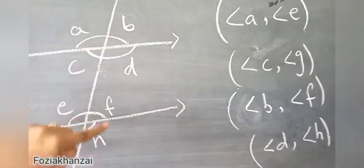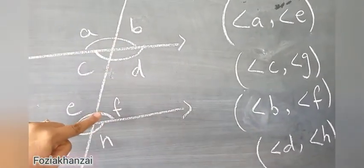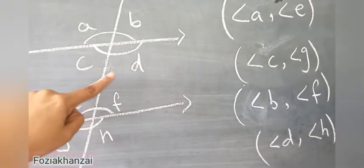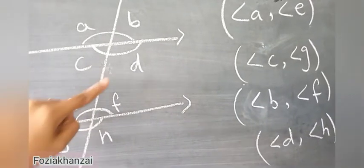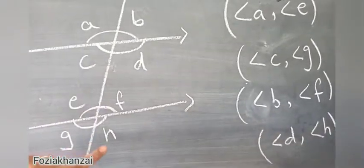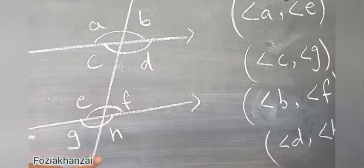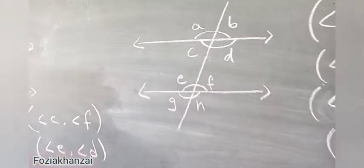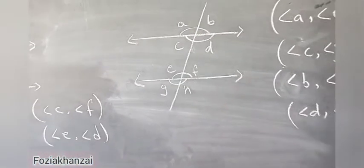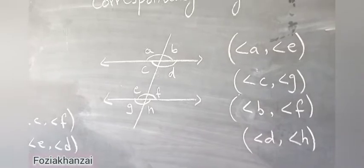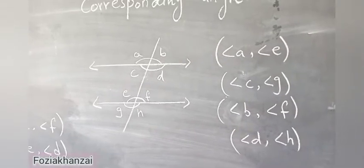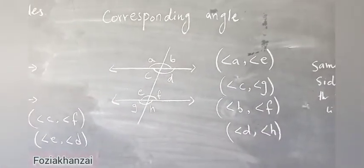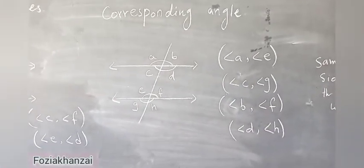Angle B is an exterior angle and angle F is an interior angle. Angle D is an interior angle and angle H is an exterior angle. In this figure we have a total of eight angles. Clear example — definition of corresponding angles.